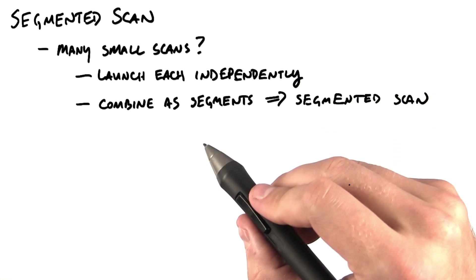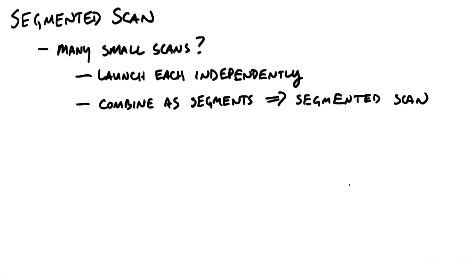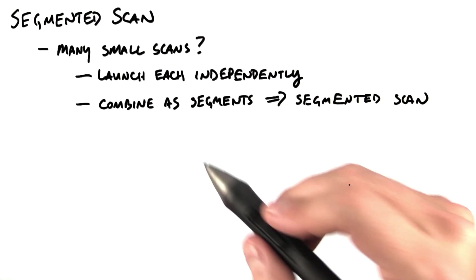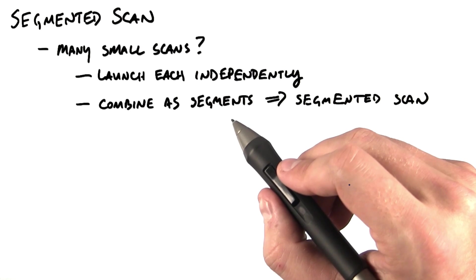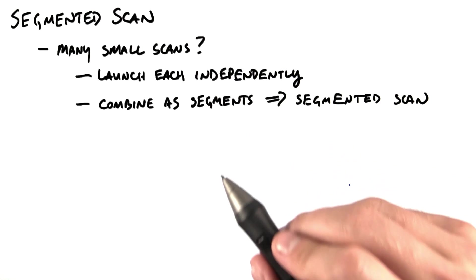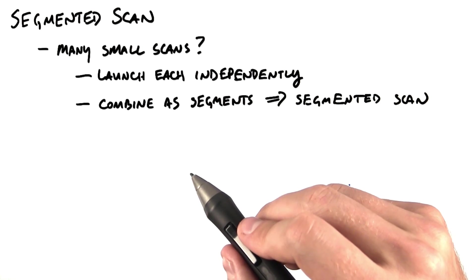In some applications, you might have the need for many small scans instead of one large scan. We've said before that when you launch a kernel on a GPU, you want to have lots of work to do in that kernel. So it doesn't make a lot of sense to launch a scan kernel separately on each one of these small scans.